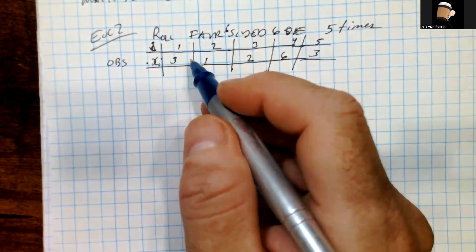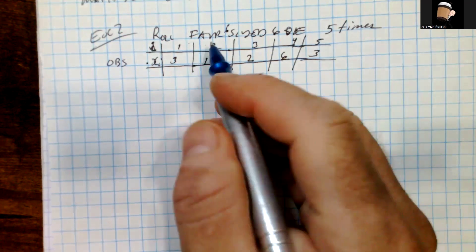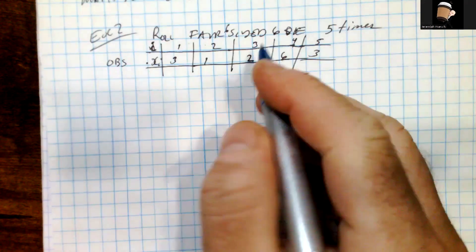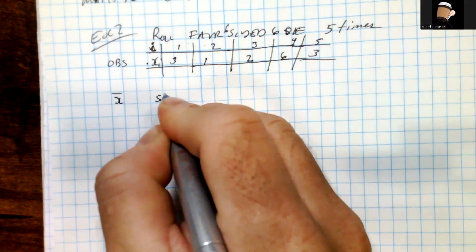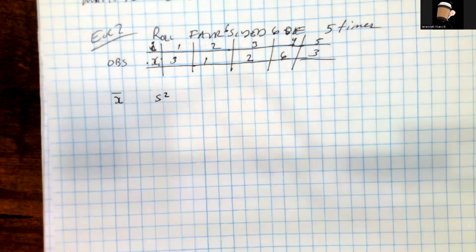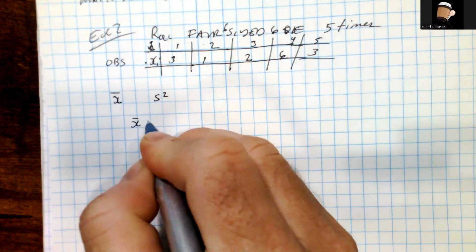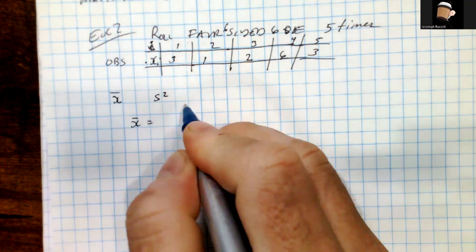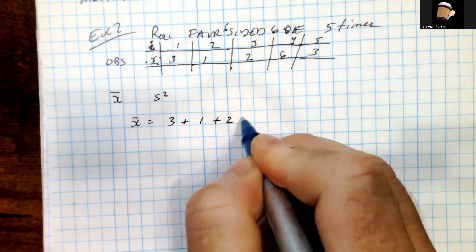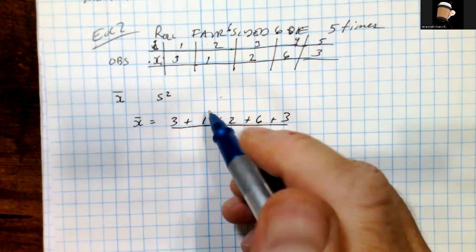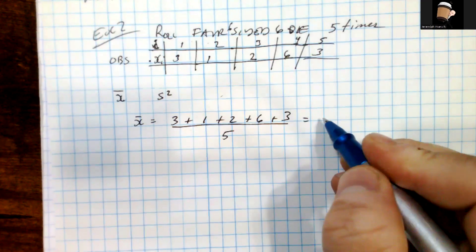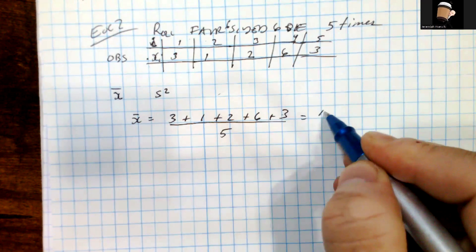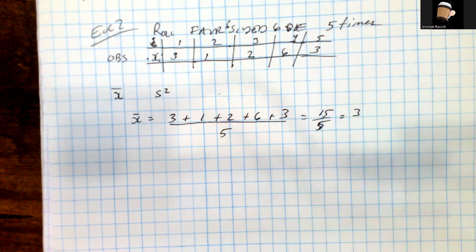In this example, we're rolling a fair six-sided die five times, and we got the following set of data — five observations with outcomes: 3, 1, 2, 6, 3. We want to compute X-bar (the sample mean) and S² (the sample variance). The sample mean is the sum of the X values divided by the number of observations: (3 + 1 + 2 + 6 + 3) / 5 = 15 / 5 = 3.